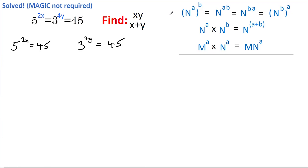Now, this first power rule tells us: if we have a number raised to a power, and that's all raised to another power, then we can rewrite that as that same number raised to the powers multiplied together. Of course, we can also do that in the reverse direction, and that's exactly what I'm going to do.